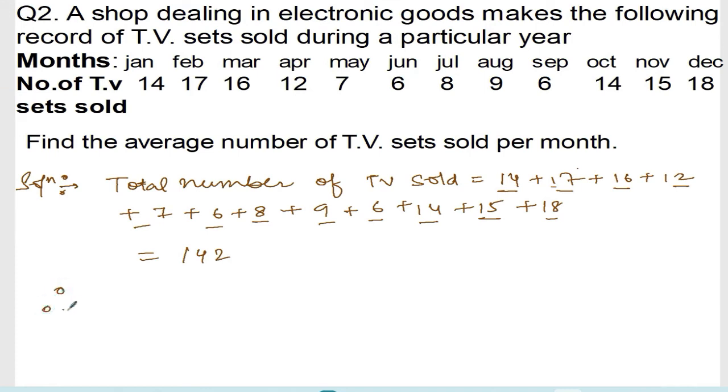So therefore, now average number of TV sold, average number of TV sets sold per month is equal to total number of TV sold divided by 12 months. Right? There are 12 months in a year.